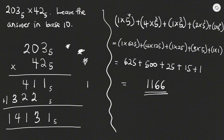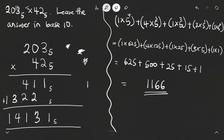So if we multiply 203 base 5 by 42 base 5, we get 14131 base 5, and if we convert that to base 10 we get 1166 base 10 as our final answer. Let's have a look at one more example.